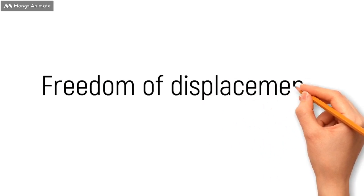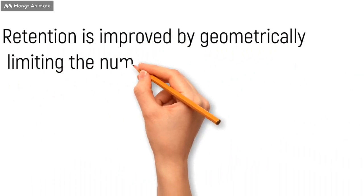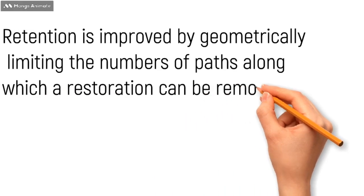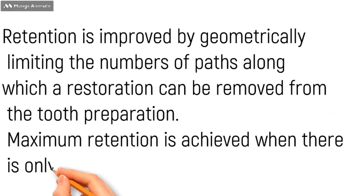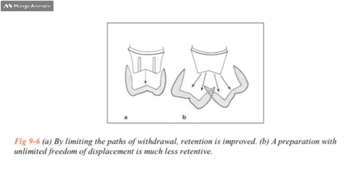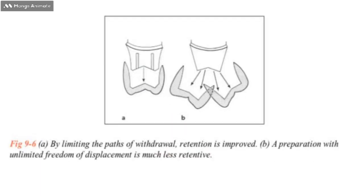Now the next point: freedom of displacement. Retention is improved by geometrically limiting the number of pathways along which a restoration can be removed from the tooth preparation. Maximum retention is achieved when there is only one path. As you can see in this figure A, a full veneer preparation with long parallel axial walls and grooves produce such retention—that is, by limiting a path of withdrawal, retention is improved. While on the opposite extreme, which is B, there is no retention because the restoration could be removed along an infinite number of paths.